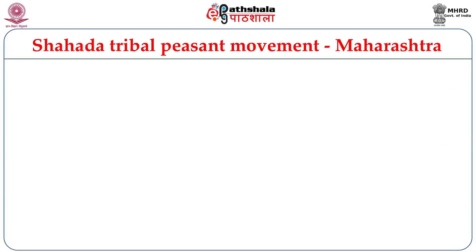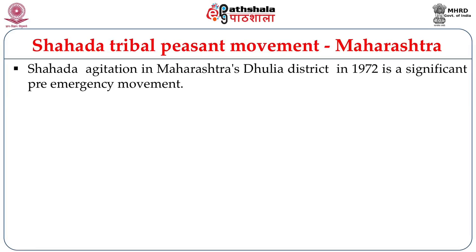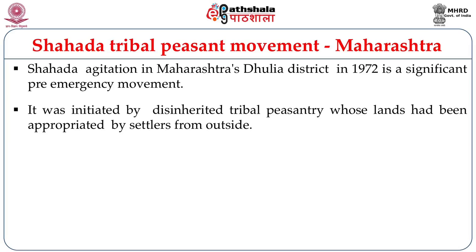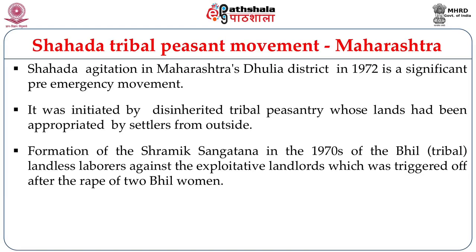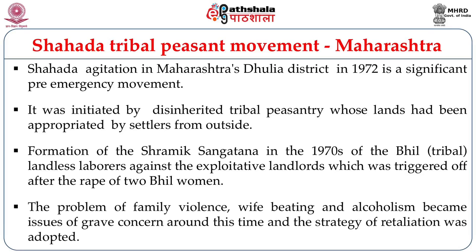The Shahada Tribal Peasant Movement in Maharashtra — the Shahada agitation in Maharashtra's Dhulia district in 1972 is a significant pre-emergency movement, initiated by the impoverished tribal peasantry whose lands had been appropriated by outside settlers. Formation of the Shramik Sangatana in the 1970s, of Bheel tribal landless labourers against exploitative landlords, was triggered off after the rape of two Bheel women.